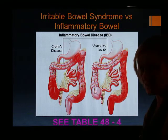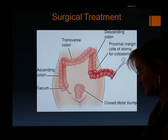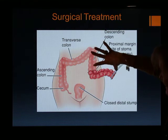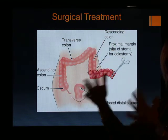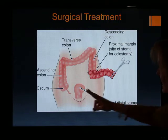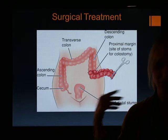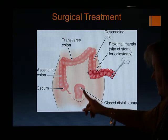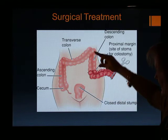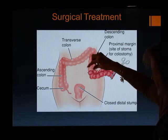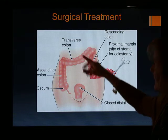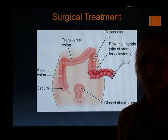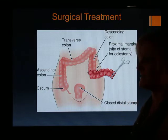If a patient has ulcerative colitis and a section of colon is affected, and all other options have been exhausted, surgery is performed to remove the affected portion of colon. A stoma is created, and this usually helps the patient feel much better — eliminating the bloating, diarrhea, cramping, abdominal pain, and bleeding.